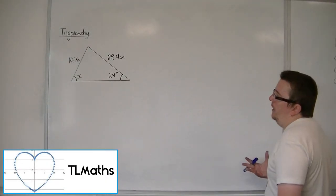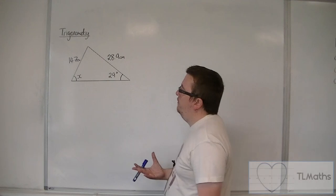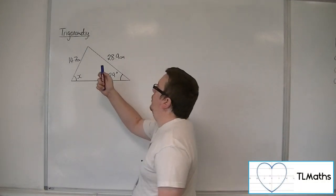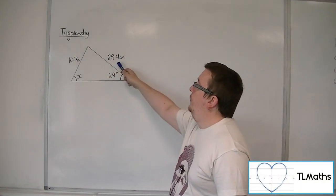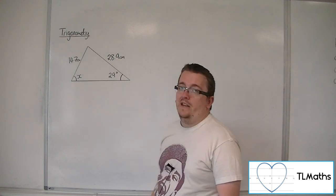So here is a scalene triangle. I know an angle, an opposite side, another side, and I want to find its opposite angle.